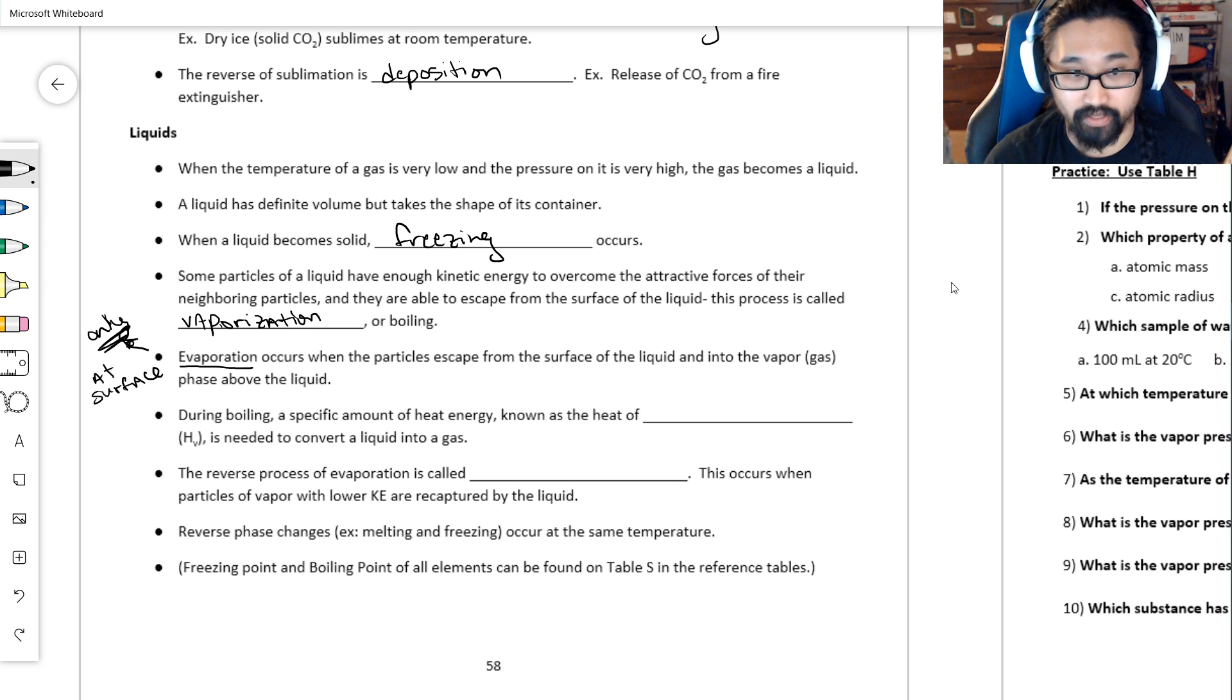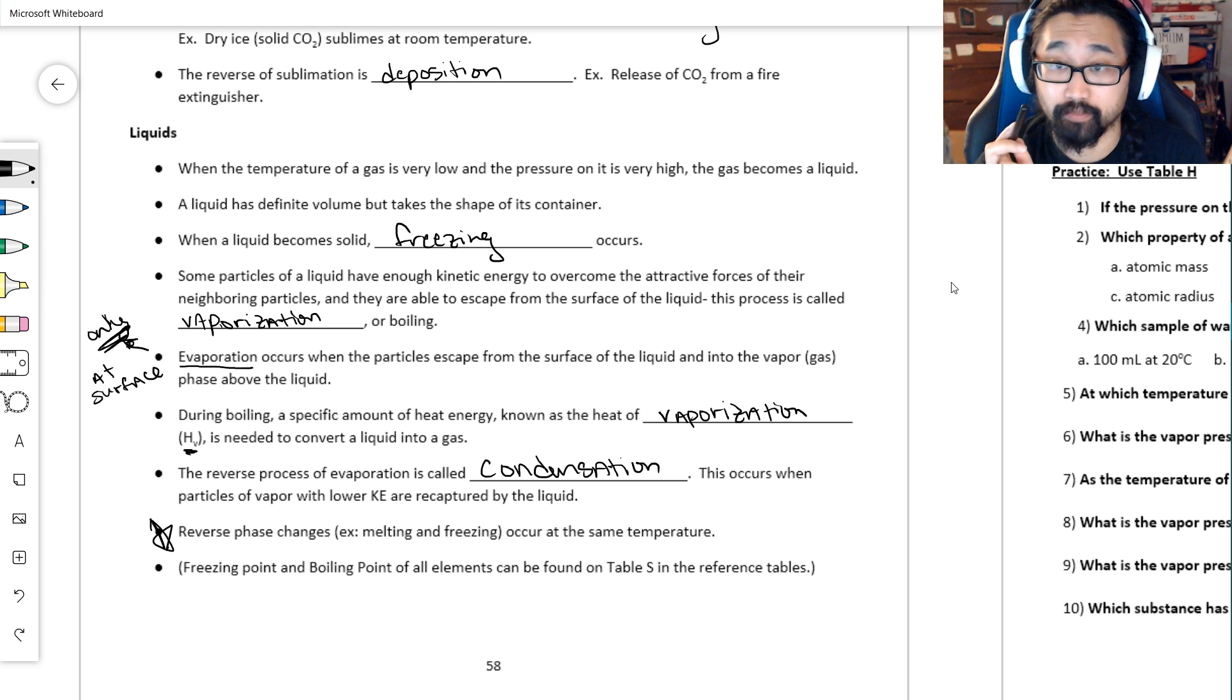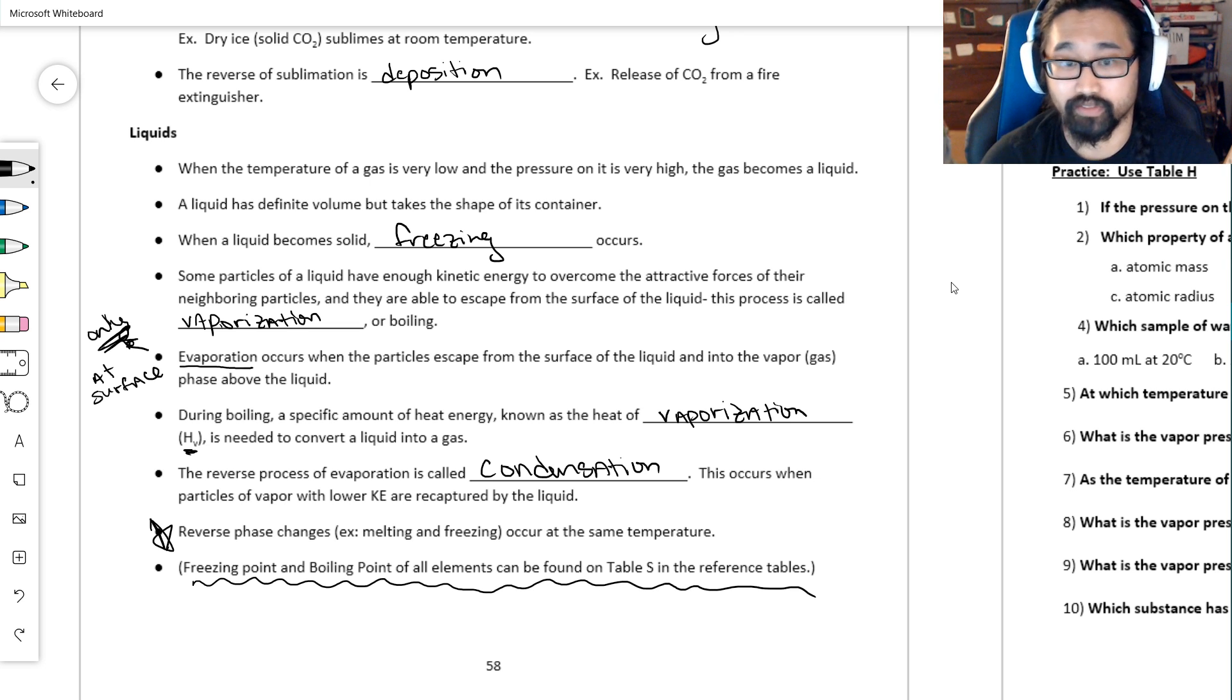When you boil or vaporize something, again a specific amount of heat energy—it's the heat of vaporization. Shocking, it has a special symbol: H for heat, V for vaporization. The reverse of evaporation is condensation. Any reverse phase changes will always happen at the same temperature, so the freezing and melting point of water and ice respectively are zero degrees Celsius. We already talked about this before the midterm, but the freezing and boiling points of everything that's relevant on the table is on Table S.